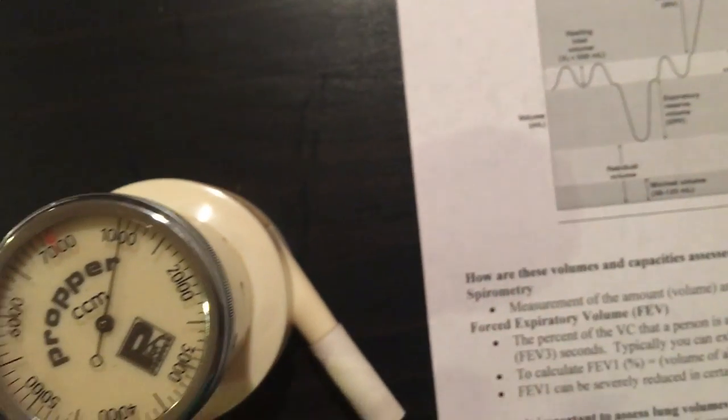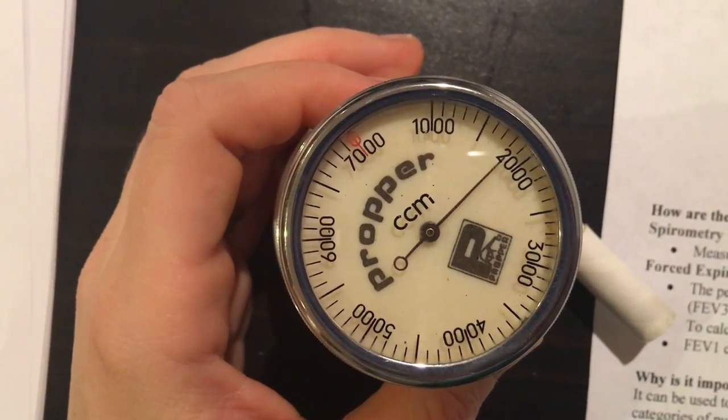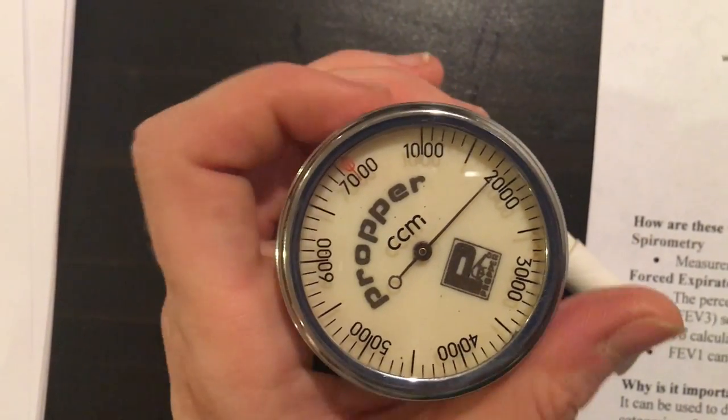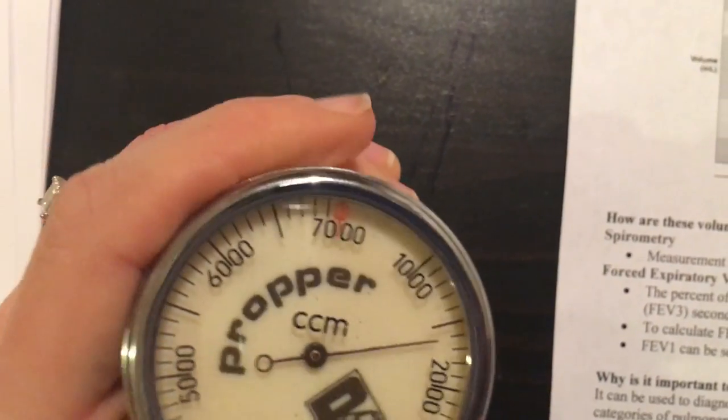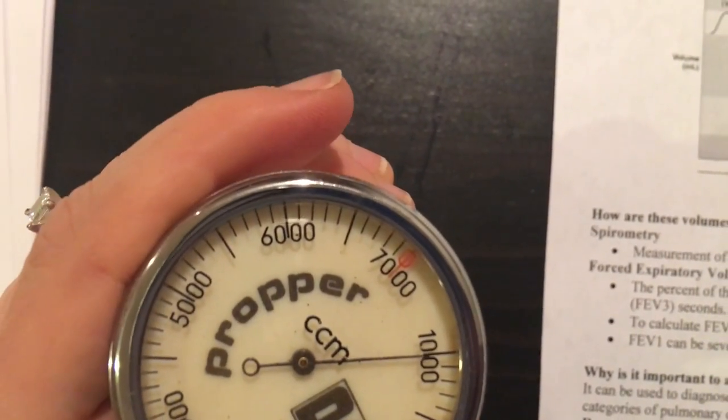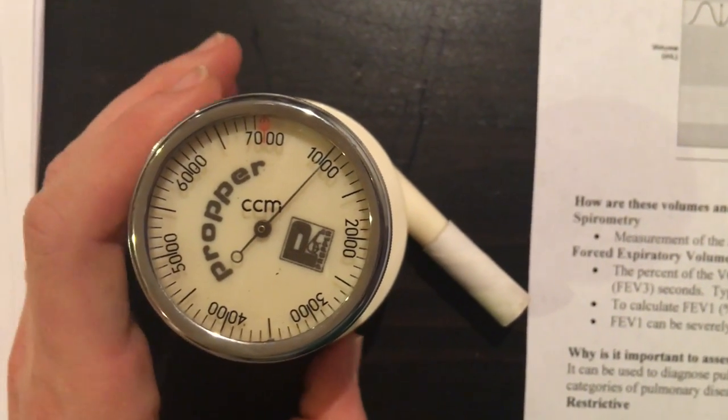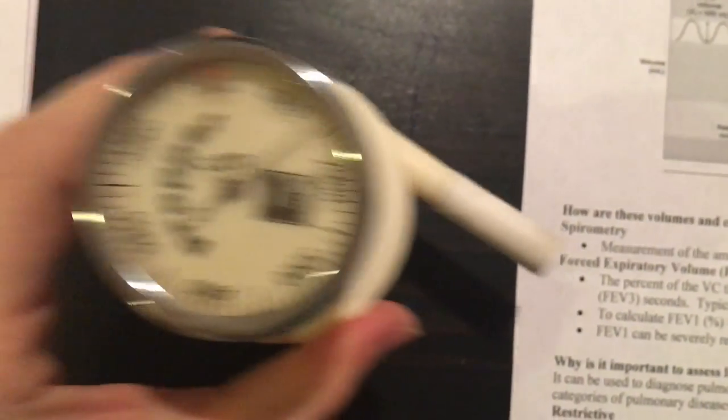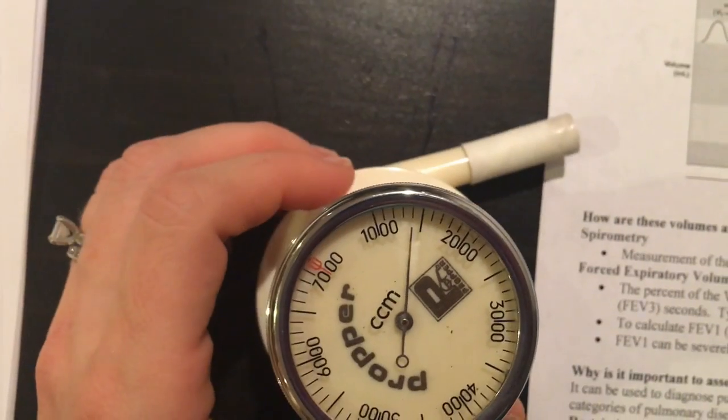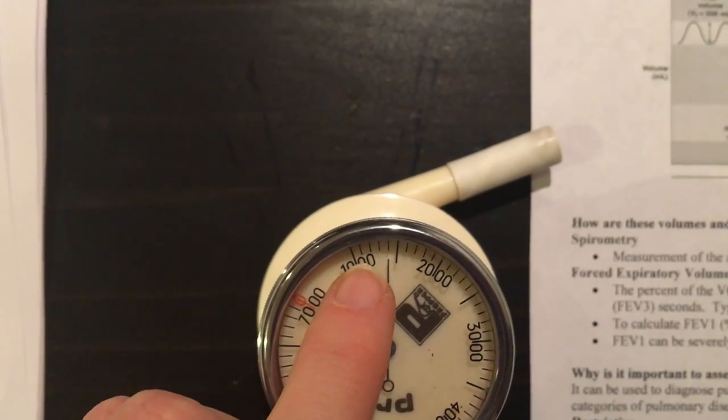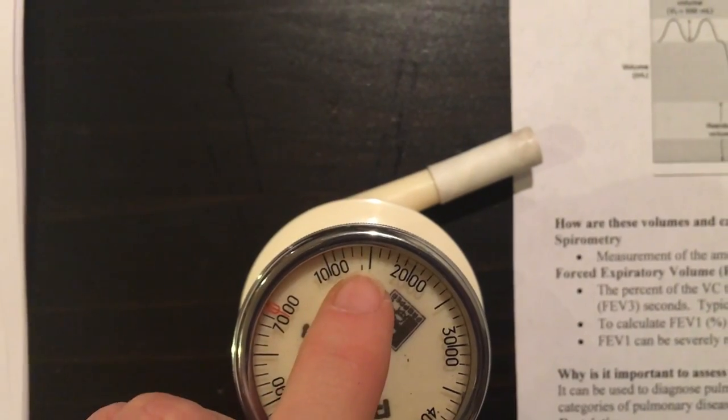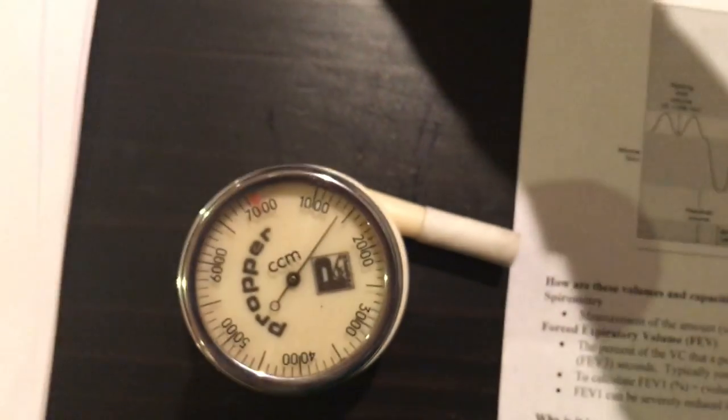Let's see what I get for tidal volume. Okay, that was probably too much. I probably breathed in a little bit too much. Let me try it again, try to do a quiet breath. Okay, better. This is going to be 100, 200, 300, 400 milliliters, so we are going to say that my tidal volume is 400 milliliters.